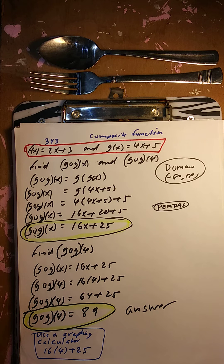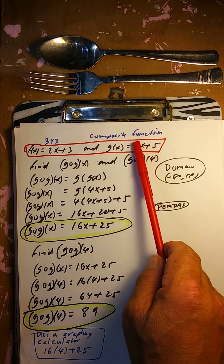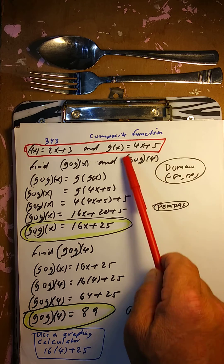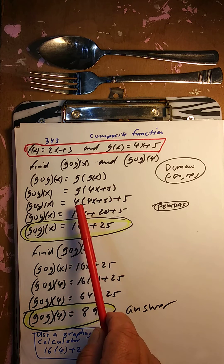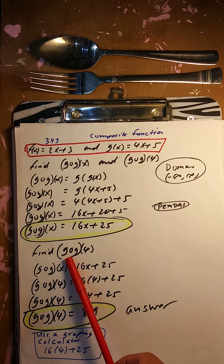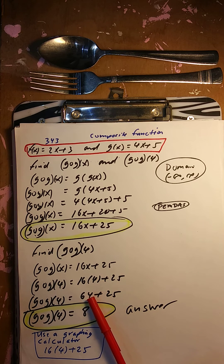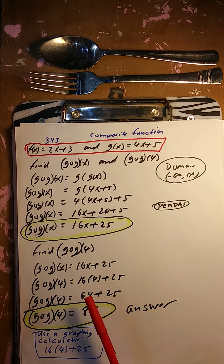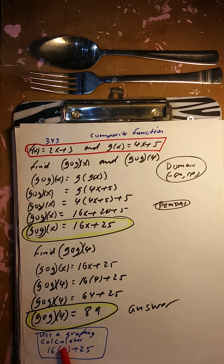One more composite function: g circle g of x, and find g circle g of 4. g of g of x means g of x goes inside itself. So 4x plus 5 goes back inside 4x plus 5. That gives 4 times the quantity 4x plus 5, plus 5. So 16x plus 20 plus 5, which is 16x plus 25. For g circle g of 4: 16 times 4 is 64, plus 25 is 89. Domain is all real numbers.